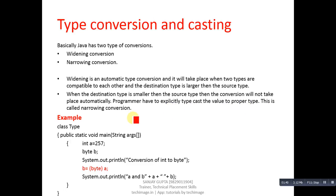Here is an example of narrowing in which explicit type conversion is available. You can also call narrowing explicit type conversion. You can see the example: class Type, public static void main, then String args...